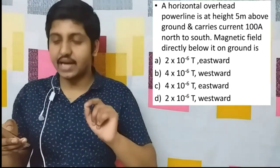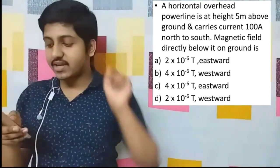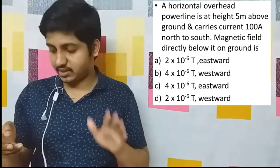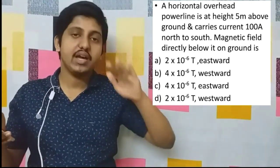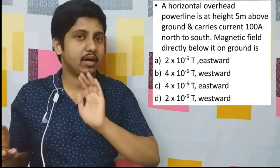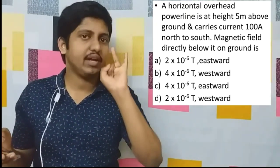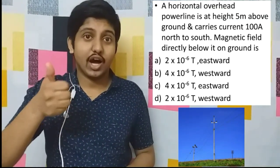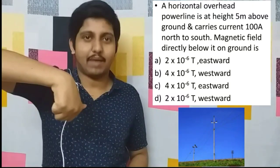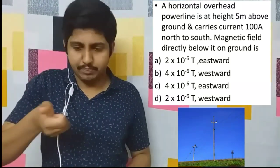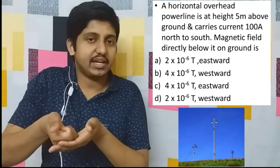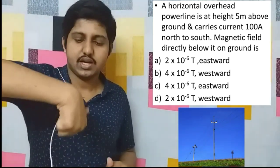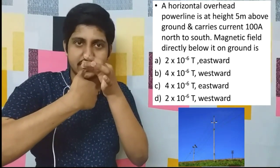The question is: a horizontal overhead power line is at a height of 5 metres above the ground and carries a current of 100 amperes from north to south. The magnetic field directly below the line on the ground is what? You have to use the right-hand thumb rule. From north to south, the current is flowing — so thumb points in the direction of the current.